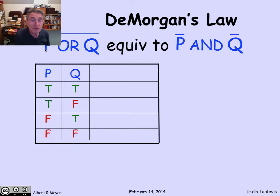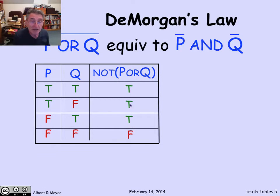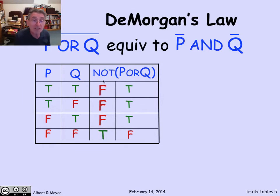Here's the truth table for the first formula, NOT (p OR q). We write out the four possible values for p and q — the four possible environments, one per row. I can fill in the values of the OR using its truth table: the first three rows have the OR subformula as true, and the last row is false when both are false. Then the NOT of all those values just flips the trues and falses. And those are the final truth values for NOT (p OR q) in all possible environments.